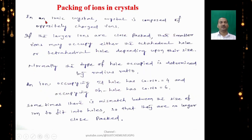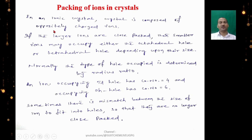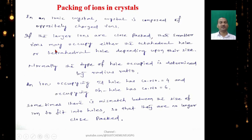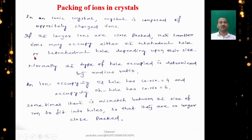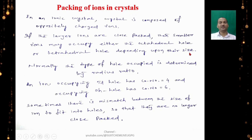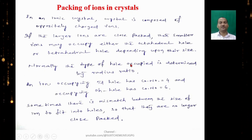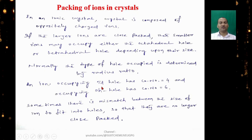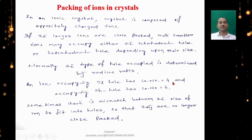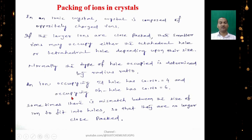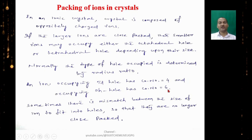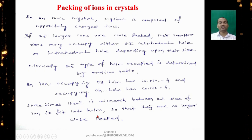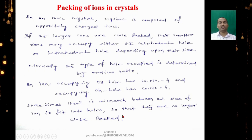In an ionic crystal, the structure is composed of oppositely charged ions. If the larger ions are close-packed, the smaller ions may occupy either an octahedral hole or a tetrahedral hole, depending upon their size. The type of hole occupied is determined by the radius ratio. An ion in a tetrahedral hole has coordination number 4, and an ion in an octahedral hole has coordination number 6. Sometimes there is a mismatch in ion sizes, so they no longer remain close-packed.